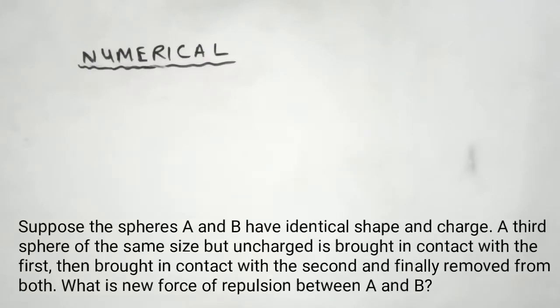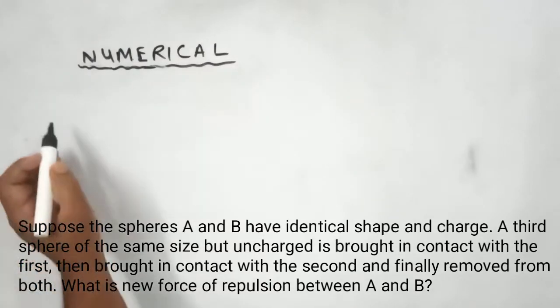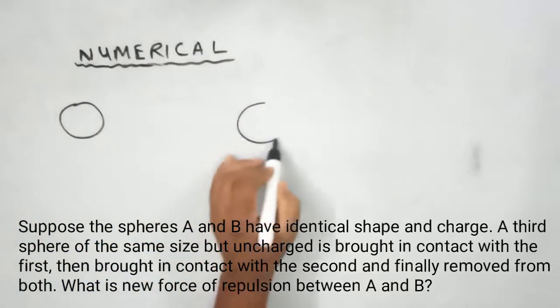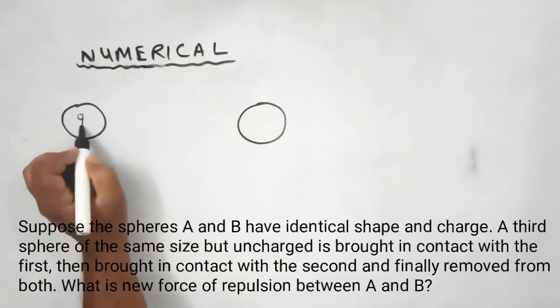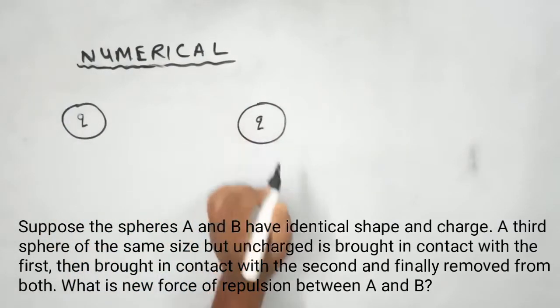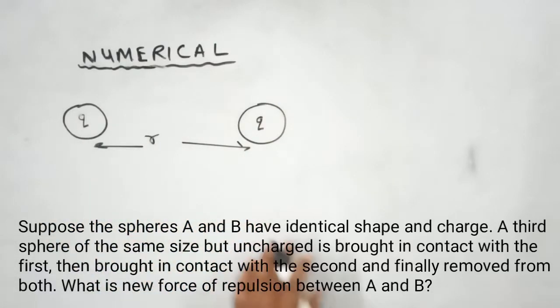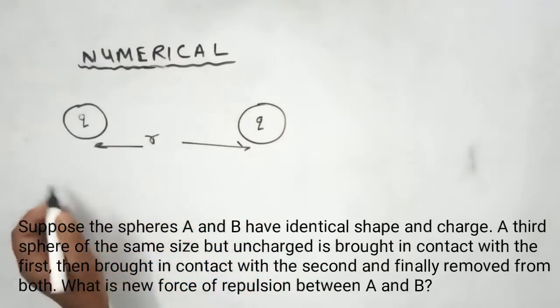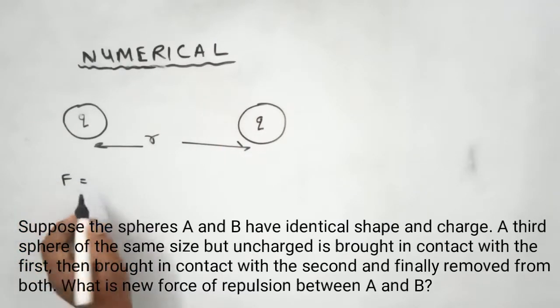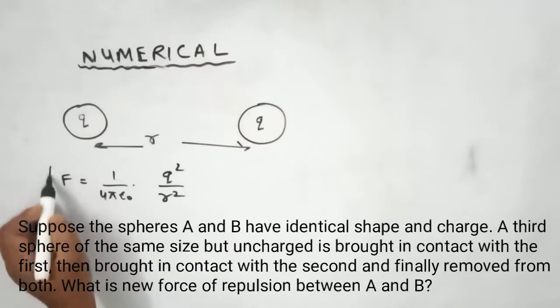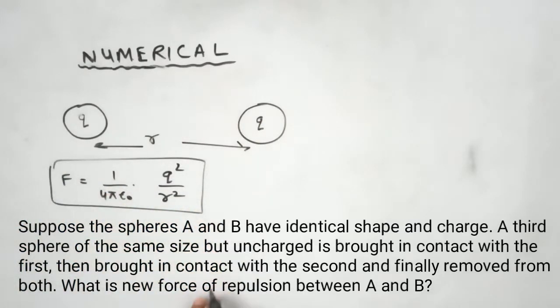What we have is two identical spheres with the same amount of charge, that is Q and Q. The separation is let's say R. So the force of repulsion will be F equals 1 upon 4 pi epsilon naught into Q square upon R square. This is the force at present.